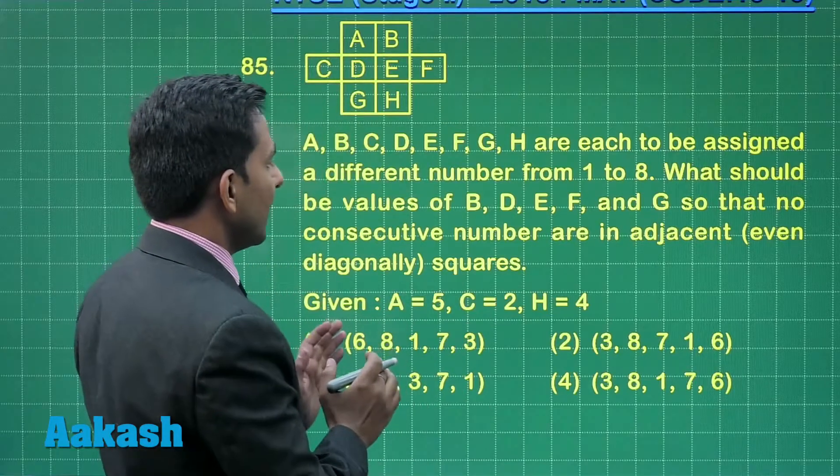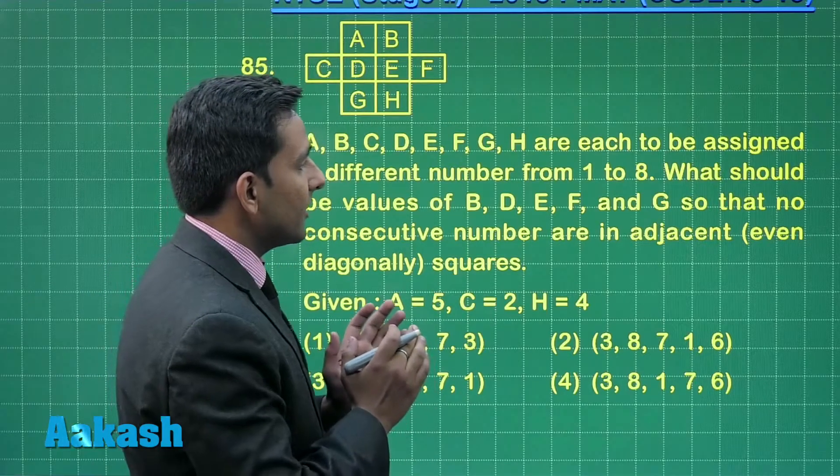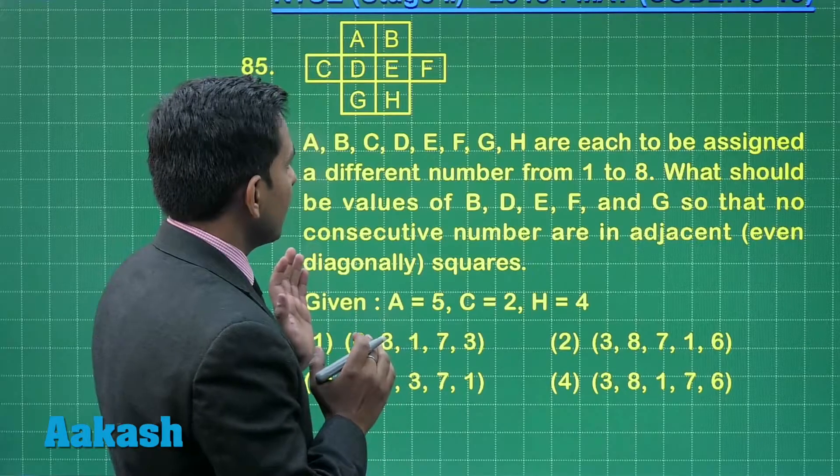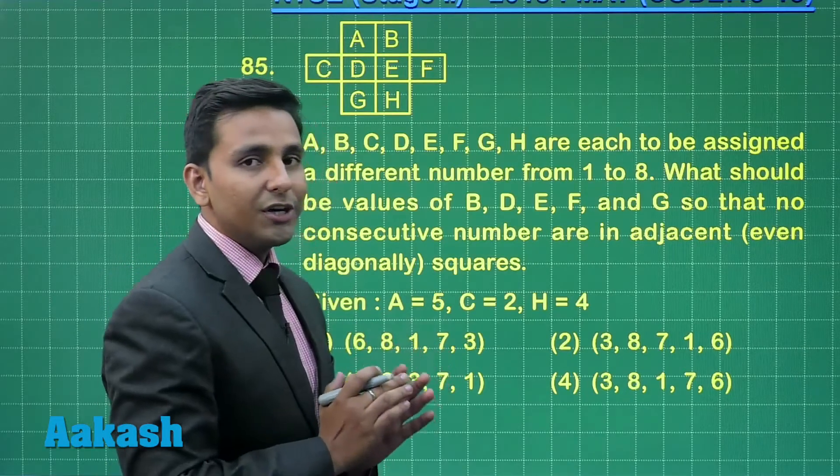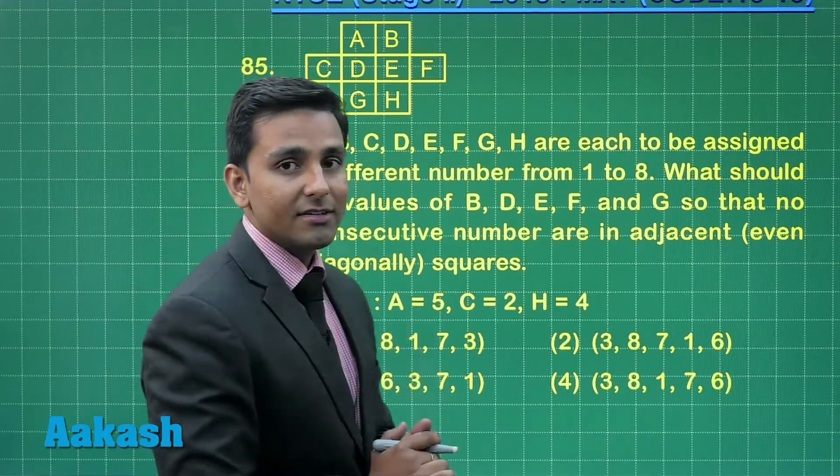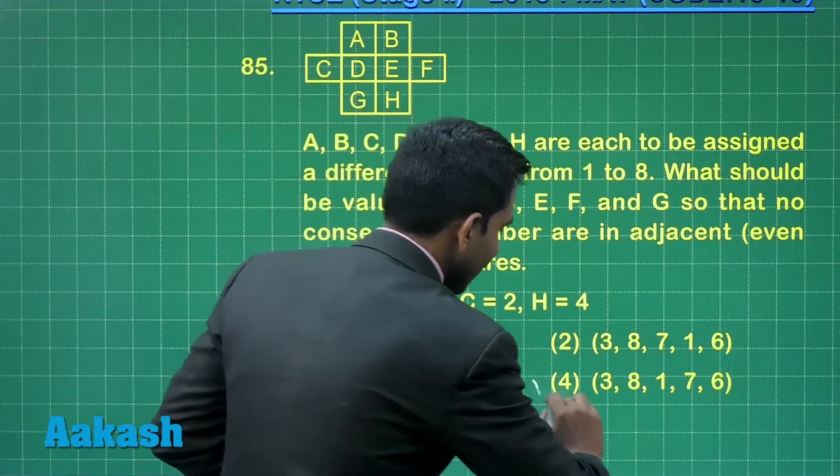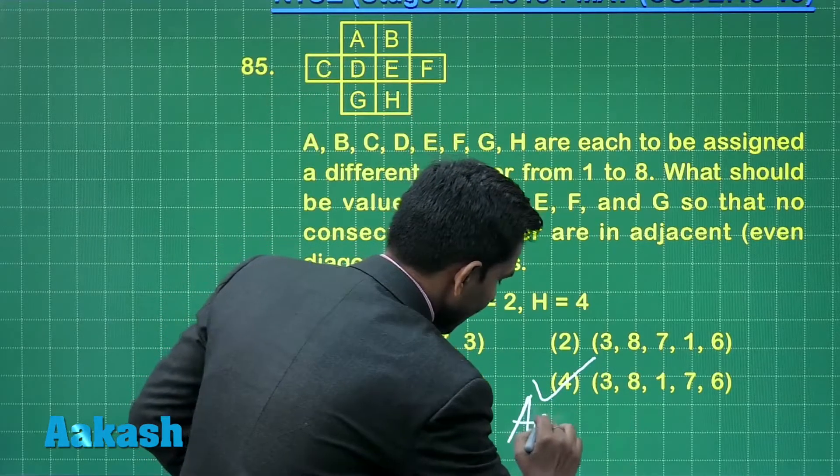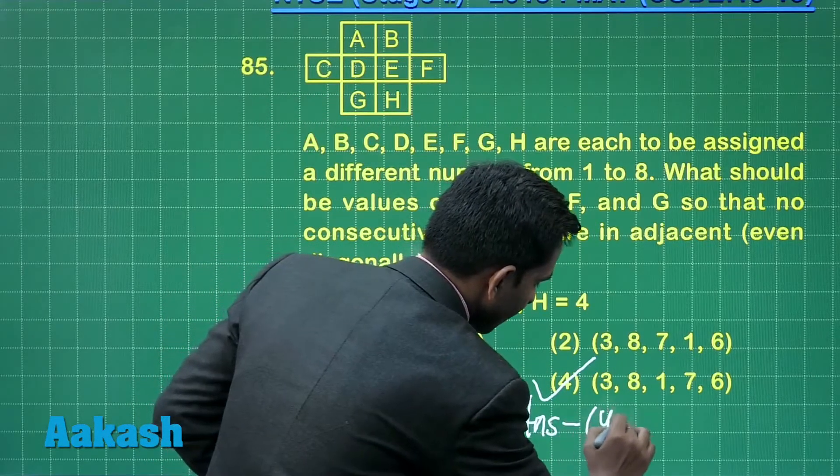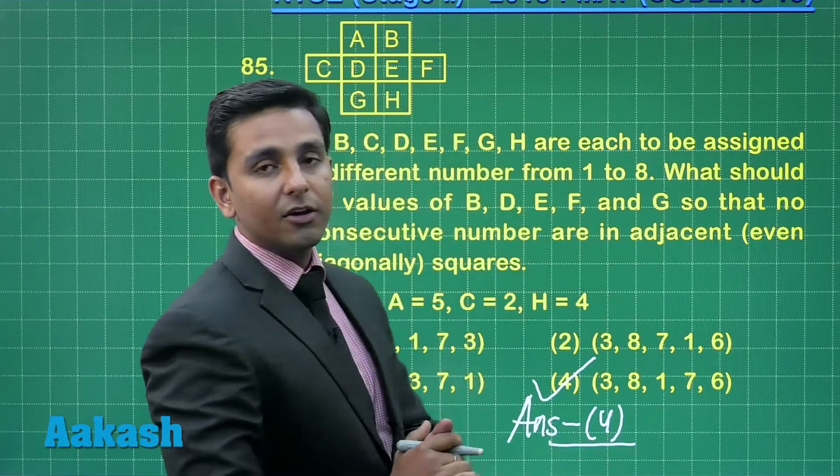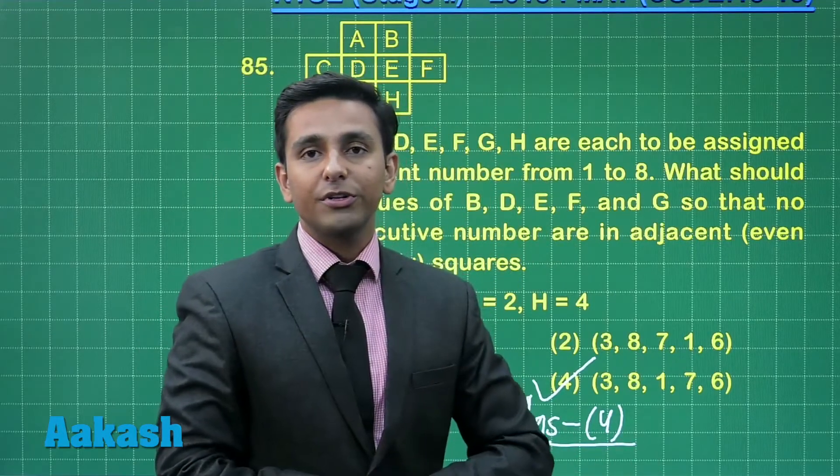That means we can arrange the letter B, D, E, F, G and they get numbers like 3, 8, 1, 7 and 6. That means option number 4 is the correct answer for this question. The answer for this question is option number 4. I hope it is clear to everyone, now let us move forward to question number 86.